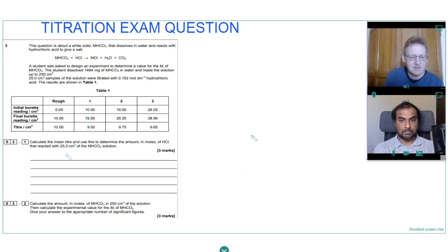So the first part asks us to calculate the mean titer and use this to determine the moles of hydrochloric acid that reacted with the solution. If we look at our titration results, there's a rough titration and then three titrations and we can see the last two titrations are concordant results within 0.1 centimeters cubed of each other. So they're the ones we'll use to calculate the mean titer. We don't really have to do a calculation there. The average of those would be 9.70 centimeters cubed. Or just add those up, divide by two and you would get 9.7 centimeters cubed.